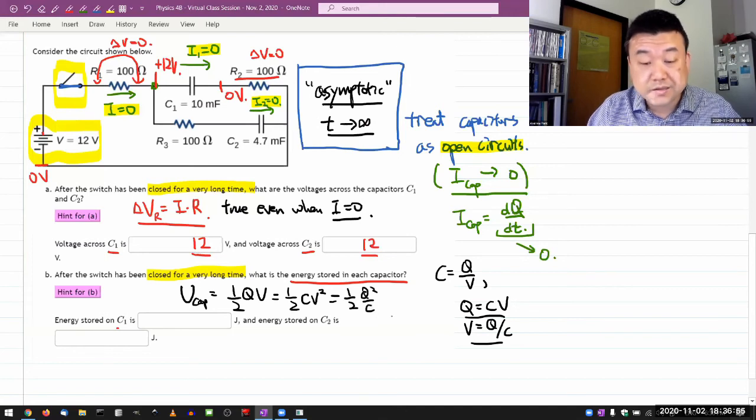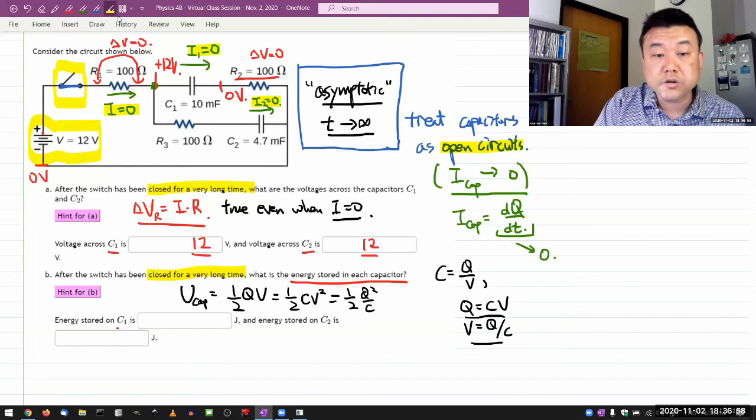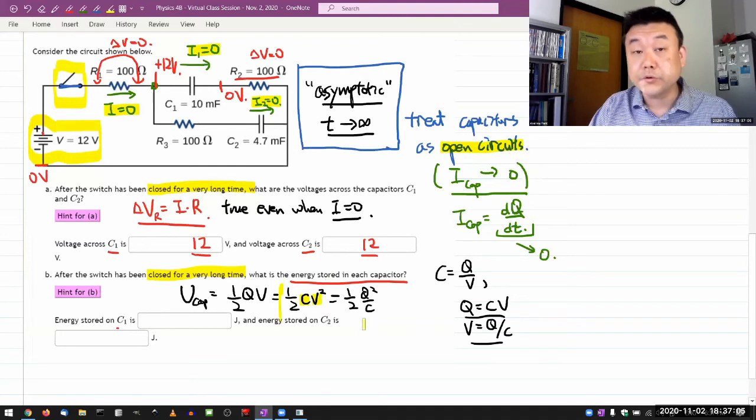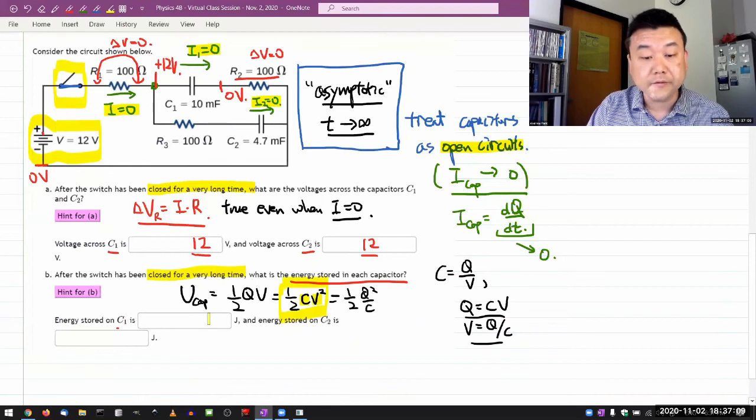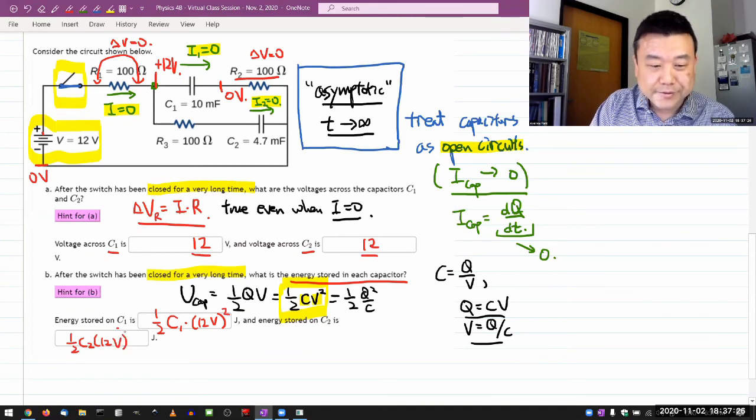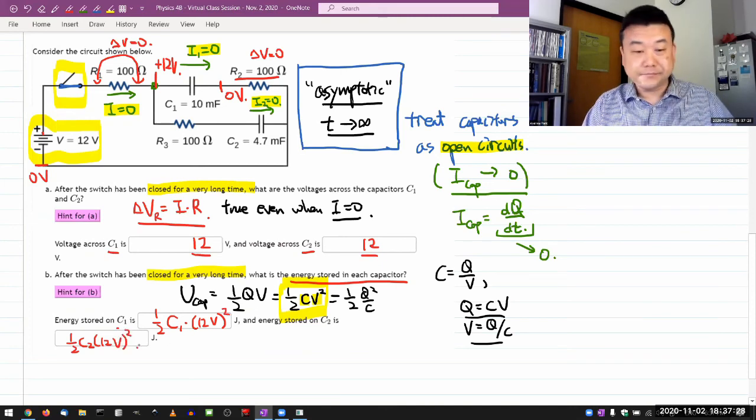In this question, you're not being told any information about the charge, but you do have capacitance and you do have voltage. So this is the equation you want to use. You plug in the numbers: one half C₁ times 12 volts squared. The second one is going to be one half C₂ times 12 volts squared. So that's it.